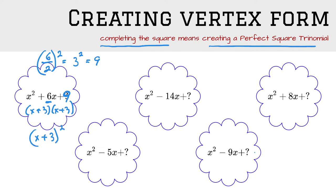In the second example, it's negative, but it doesn't change the process. So take b divided by 2, and you will get negative 7. Don't forget to square it, which becomes positive 49.